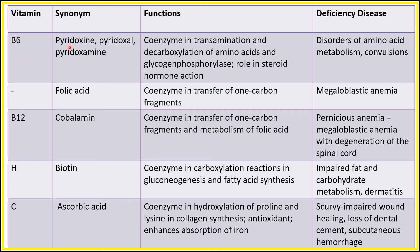Next is Vitamin B6, also known as pyridoxin, pyridoxal, and pyridoxamine. Its function as a coenzyme is in transamination and decarboxylation of amino acids and glycogen phosphorylase. It has a role in steroid hormone action. Deficiency disease involves a disorder of amino acid metabolism and convulsions.